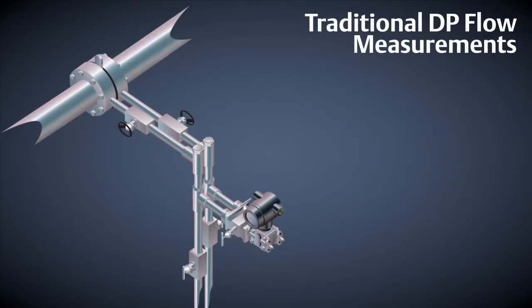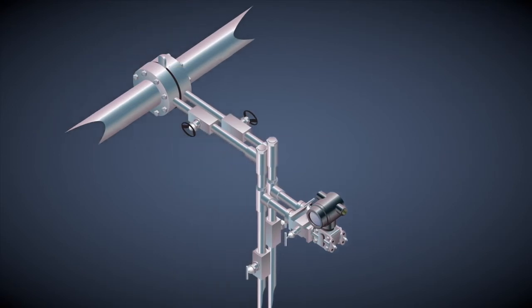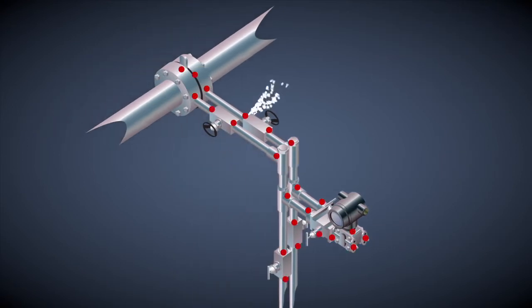Traditionally, transmitters were connected to the process with external impulse piping. Impulse piping is a major expense and gives opportunities for multiple leaks and creates unnecessary safety hazards by adding extra valves and manifolds to the process connection.